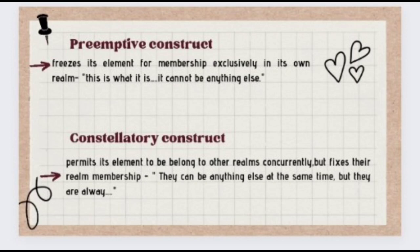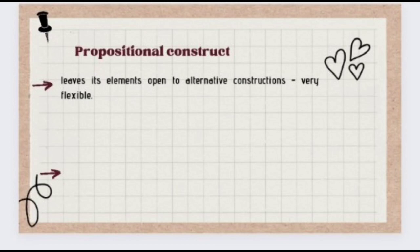The constellatory construct permits its elements to belong to other realms concurrently but fixes their realm membership — they can be anything else at the same time, but they are always fixed. This is stereotypical thinking. For instance, a person may say 'my best friend is a rugby player but he is quite different from all the others.' An exception is made of the individual and the stereotype is not invalidated. Constellatory stereotypical construing is an efficient and easy way of making sense of the world.